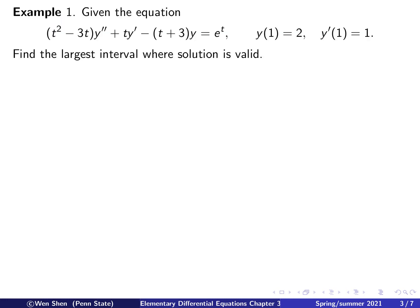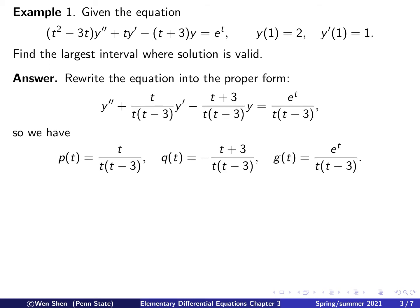Now let's take an example to see how we can utilize this theorem. We have the equation: t squared minus 3t in front of y double prime, then ty prime, then negative t plus 3 times y, and the right hand side is e to the t. The initial condition is given at t0 equals 1. We need to find the largest interval for t where the solution is valid — we are not asked to solve it, just to identify the interval where we will have a unique solution. We need to apply the existence and uniqueness theorem and verify the conditions.